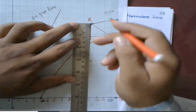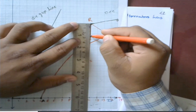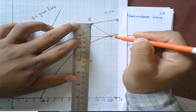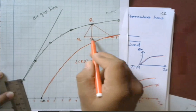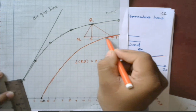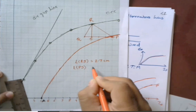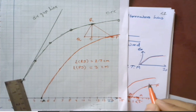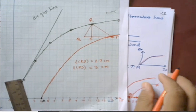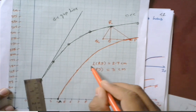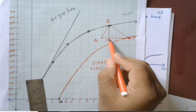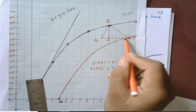Now measure the lengths: length of RS = 2.7 centimeter and length of SP = 3 centimeter. The length RS represents the leakage reactance drop (Ia × Xl), and SP represents the field current that overcomes the armature reaction effect (If2).